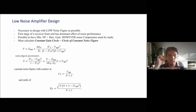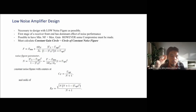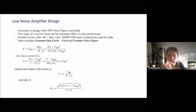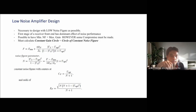For the constant noise figure, we must know how to calculate the noise figure parameter n. The formula is: n equals |gamma_S minus gamma_optimum|² divided by (1 minus |gamma_S|²). That is the parameter for the noise figure.